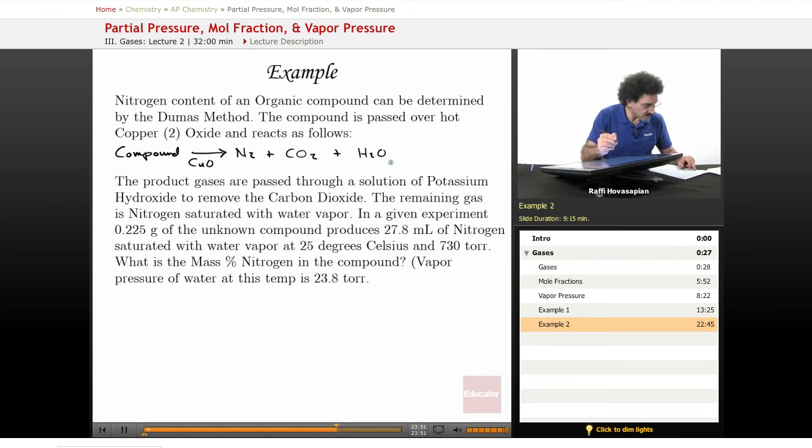The product gases are passed through a solution of potassium hydroxide to remove the carbon dioxide. So you produce three gases, and then you pass it through a solution of potassium hydroxide that binds the carbon dioxide and gets it out of the way. The remaining gas is nitrogen saturated with water vapor. That just means nitrogen and water vapor in the same gas mixture.